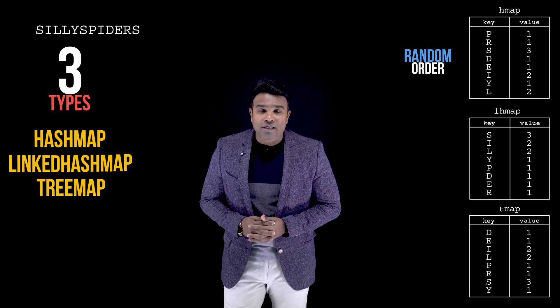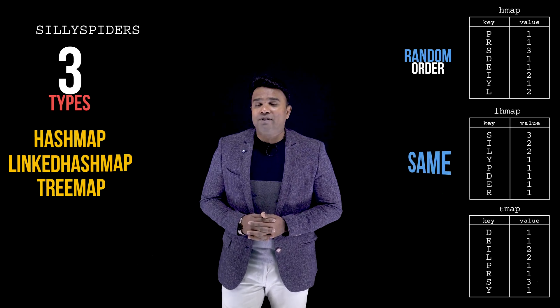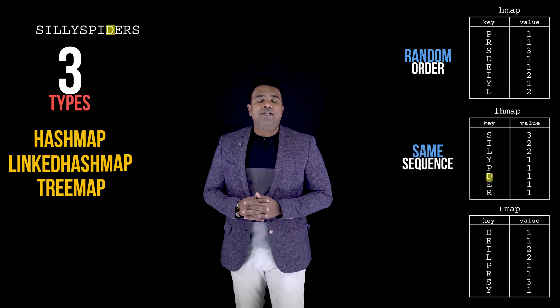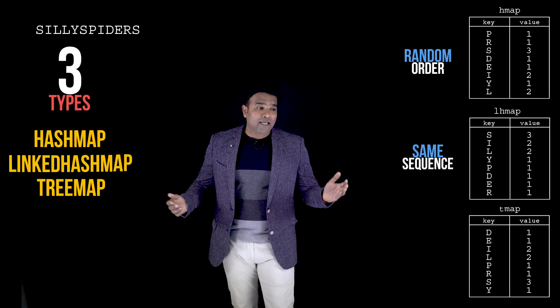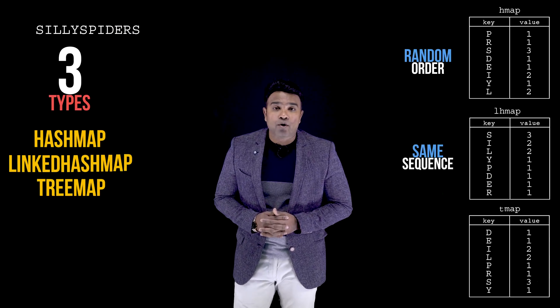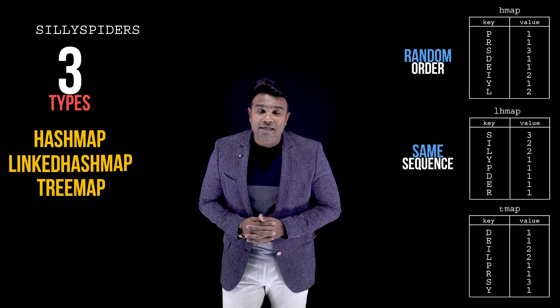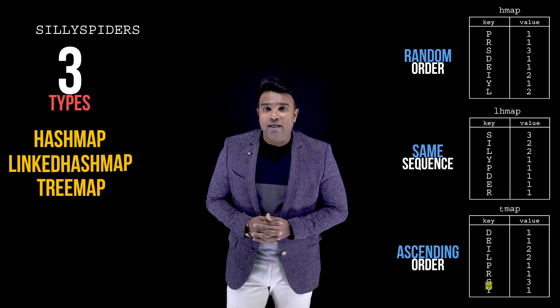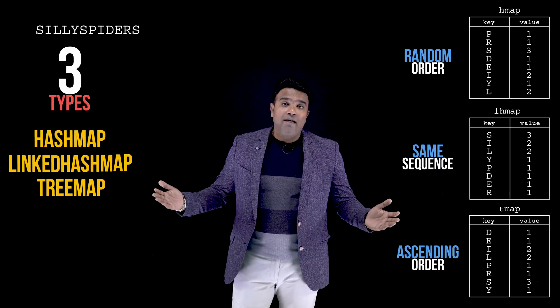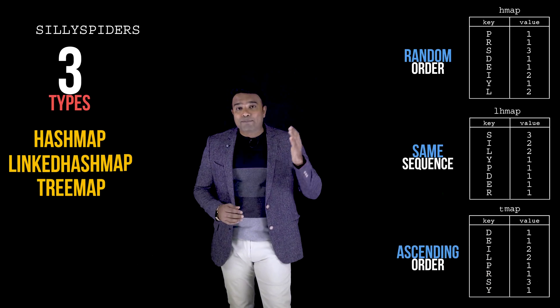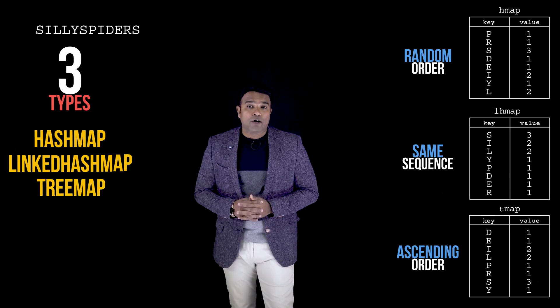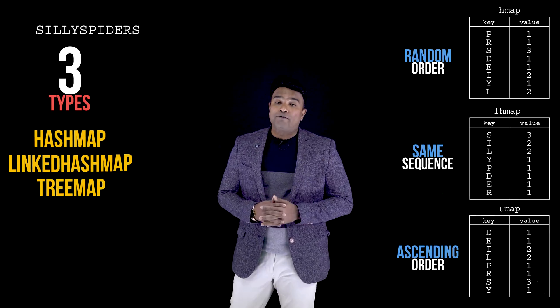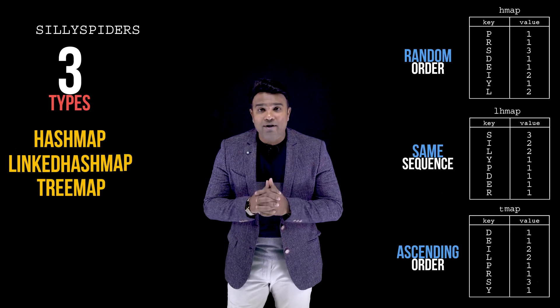The LinkedHashMap will store the data in the same sequence as it appears in the input string. Whereas in the case of the TreeMap, the data is stored in ascending order with respect to the key. These maps store the data in different orders, but all three are giving me the same information.